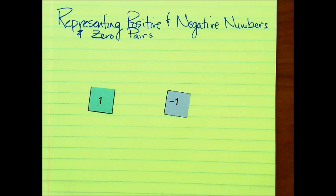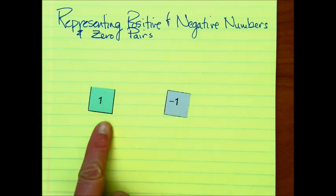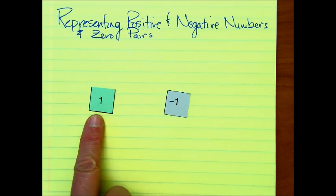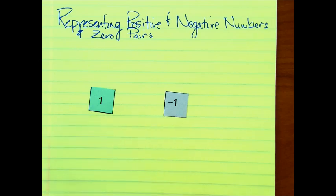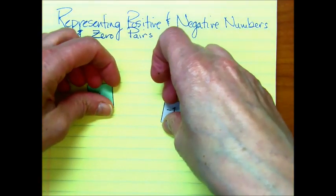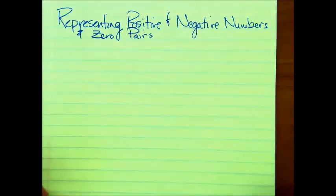I'm using here some tiles. These green ones — I don't know if you can see the color very well, but this is a green, and this represents a positive one. The gray represents a negative one. I'm going to be using an assortment of these tiles. If you want to do the exercise along with me and you have tiles, go ahead and get them out and we can do them together.